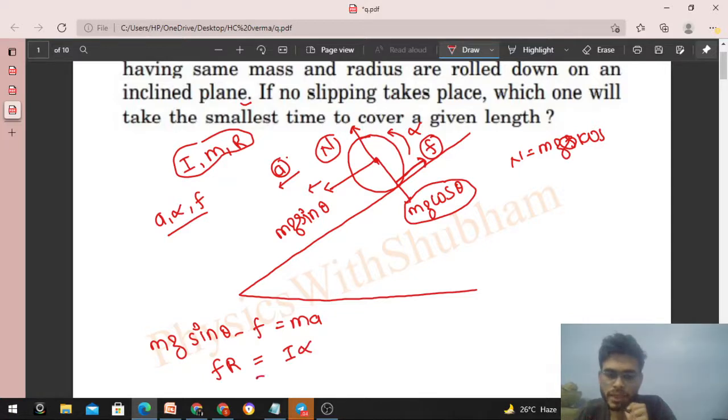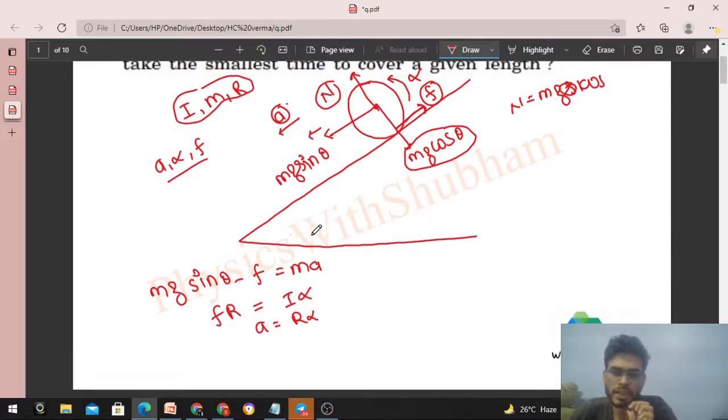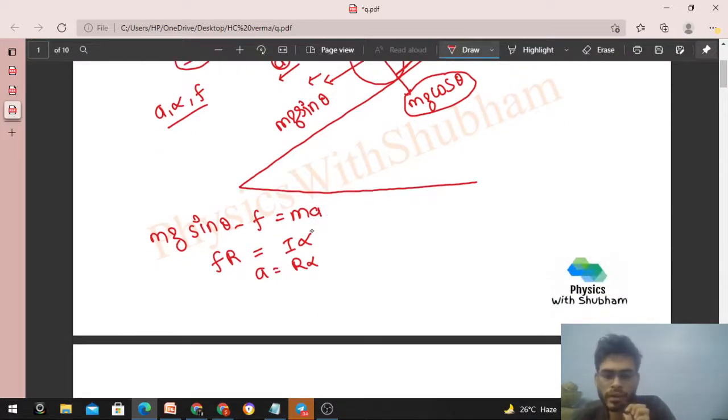Third equation: simply a equals r into alpha. In pure rolling, linear acceleration will be r times angular acceleration. So let's eliminate alpha first. We need a because whichever has maximum acceleration will have minimum time period. You can easily eliminate alpha—that is a by r. So here, in place of alpha, put a by r.